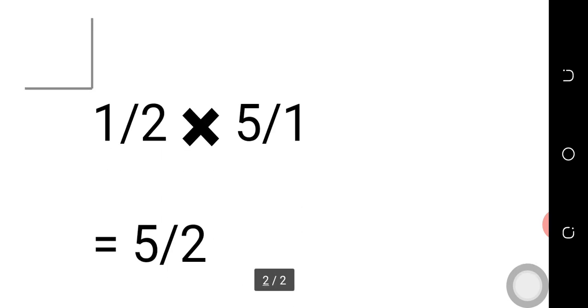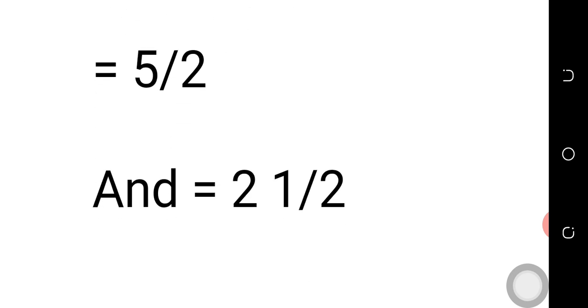Another question: how many one-fifths are there in a half? How many one-fifths are there in a half? What we need to do is say one over two divided by one over five, since we want to find how many one-fifths fit into a half. Division turns to multiplication: one over two times five over one. Five over two gives us two and a half, or two point five.